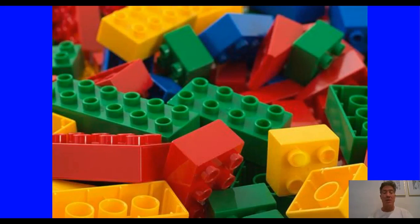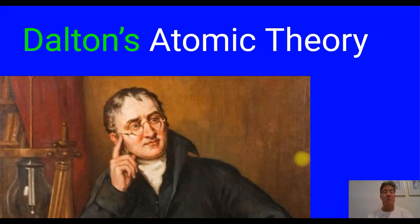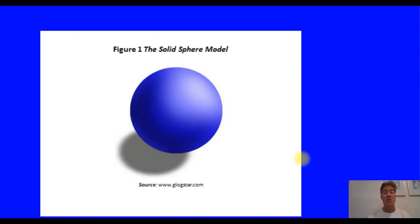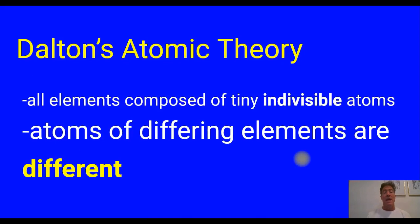Some sort of fundamental Lego out of which everything else is built. This was revived by an English school teacher named Dalton, and it became the modern day atomic theory. Dalton's atomic theory had several parts. He started with the same idea of Democritus that all the elements were composed of tiny indivisible particles, and he used the Greek name for uncuttable — atomos — atoms. He thought of them as solid spheres, like little marbles or little bowling balls. He theorized that every element had a different atom, and that's what made it different.